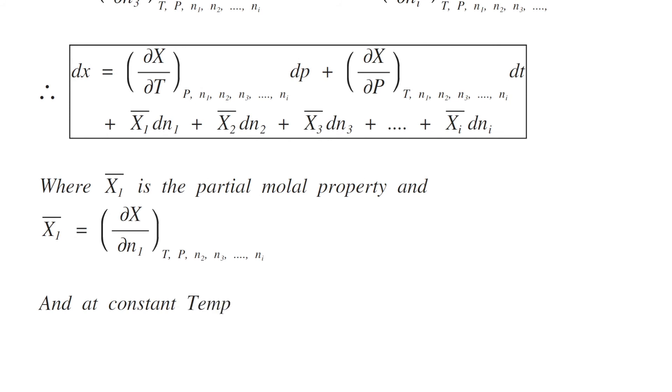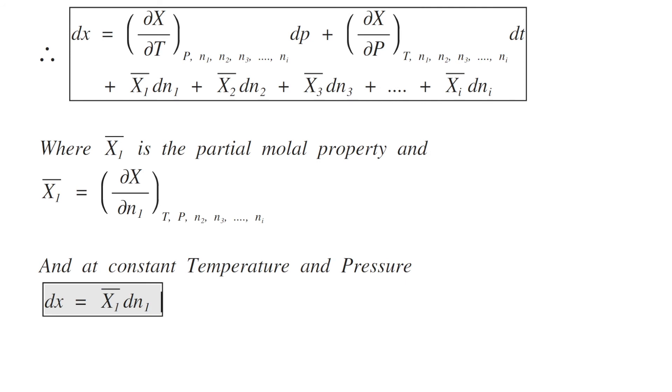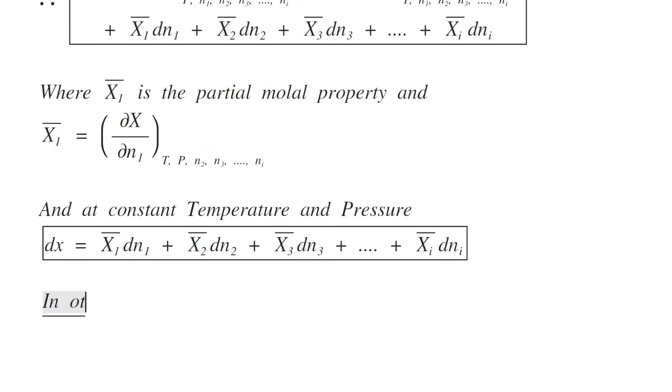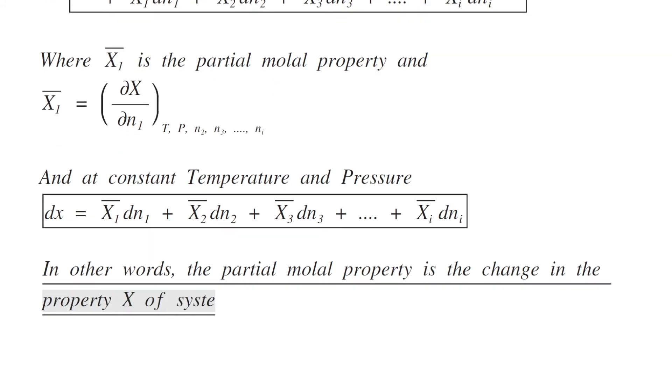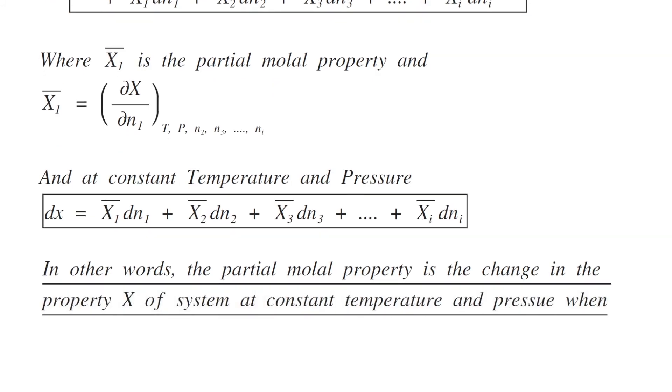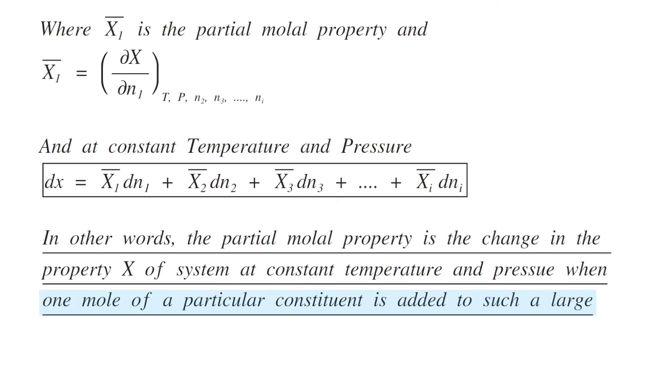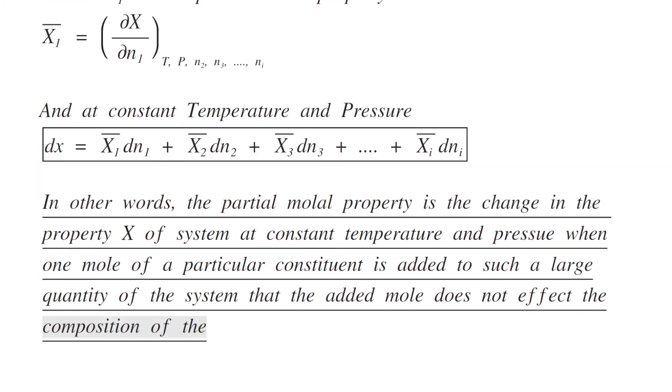At constant temperature and pressure the first two terms become zero, therefore dX equals X1 bar dN1 plus X2 bar dN2 plus X3 bar dN3 plus XI bar dNI. In other words, the partial molar property is the change in the property X of system at constant temperature and pressure when one mole of a particular constituent is added to such a large quantity of the system that the added mole does not affect the composition of the system.